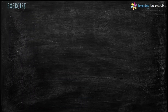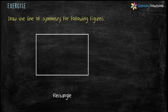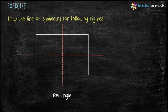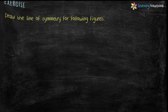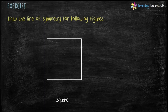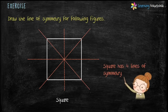Now let's do an exercise. Draw the line of symmetry for the following figures. The first figure is a rectangle. A rectangle has two lines of symmetry, because we can fold the rectangle into two equal halves vertically as well as horizontally. The next figure is a square. A square has four lines of symmetry, because a square can be folded into two equal halves vertically, horizontally, as well as diagonally.